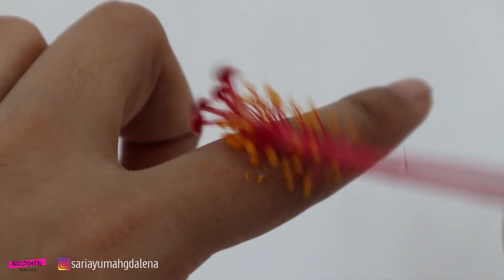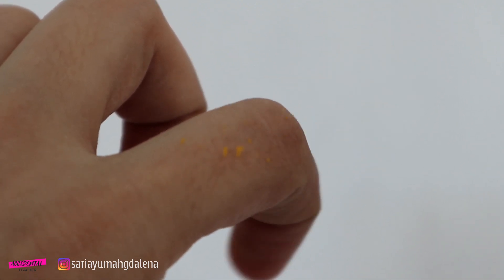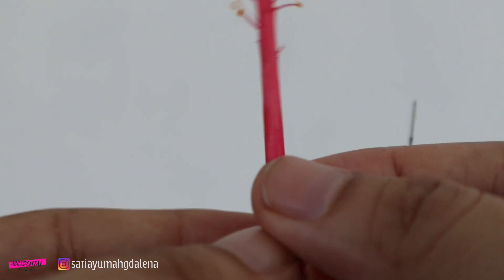These pollen grains, when it is sticked into an insect, the insect will help the pollination. So it will be dispersed to another places.